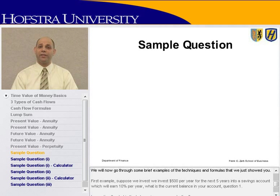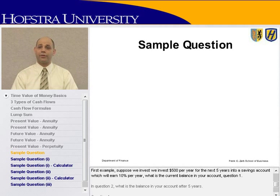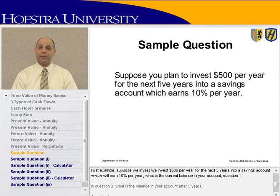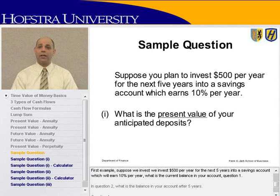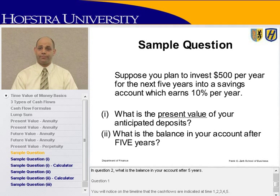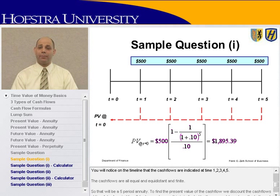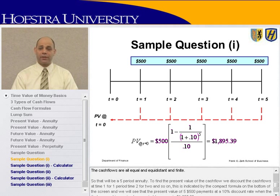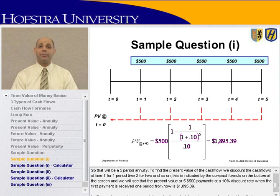We'll now go through some brief examples. First example: suppose we invest $500 per year for the next five years into a savings account earning 10% per year. Question one: what is the current balance in your account? On the timeline, the cash flows are indicated at time periods 1 through 5 — equal, equidistant, and finite — so we have a five-period annuity. Discounting each cash flow back to time 0, the present value of five $500 payments at a 10% discount rate is $1,895.39.